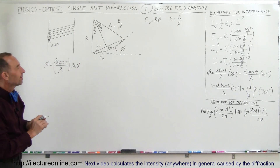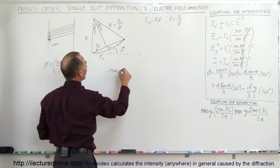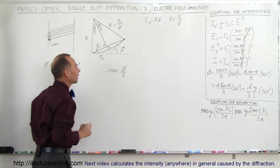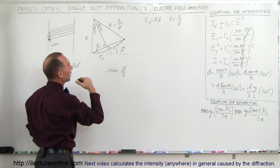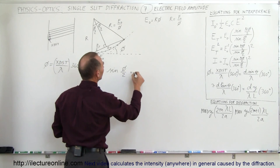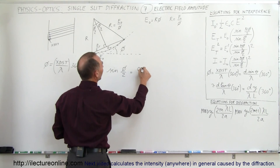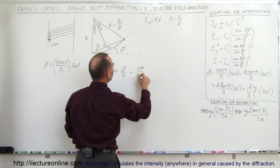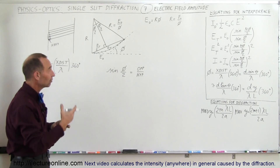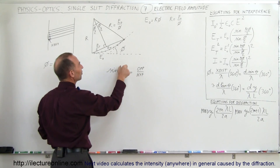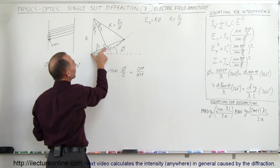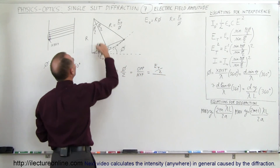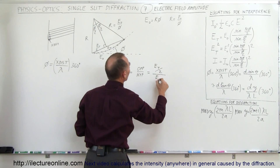The next thing we want to do is take the sine of phi divided by 2. We divide by 2 because that gives us a right-angle triangle. By definition, the sine of any angle is equal to the opposite side divided by the hypotenuse. In this case, the angle is phi over 2, so the opposite side is E-total divided by 2, and the hypotenuse R is E-naught divided by phi.